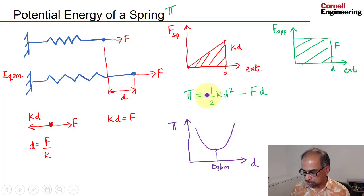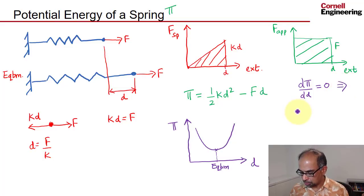To find that in the potential energy approach, what you would do is differentiate this with respect to D. So you'd say dπ/dD—that looks weird, not the best of notations, but hopefully you get the idea—and you set that to zero, and you'll get this point. You can verify that will give you D equal to F over K, which is the same result.